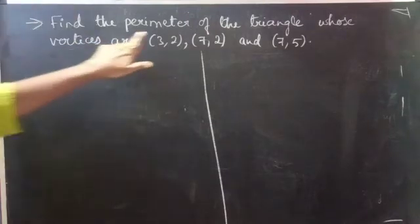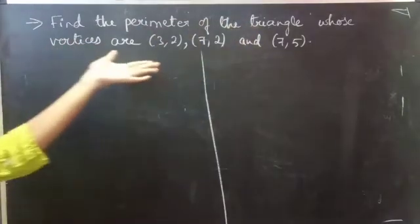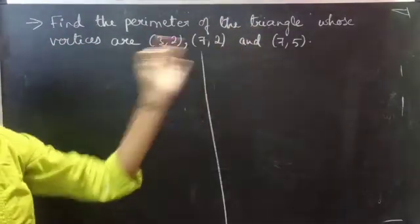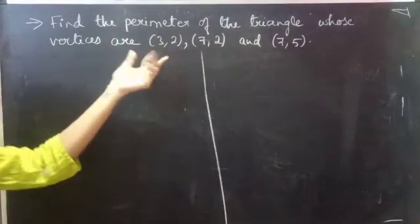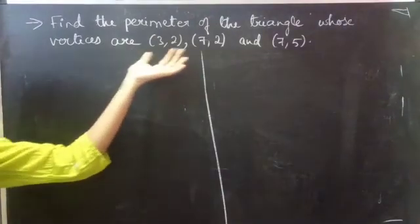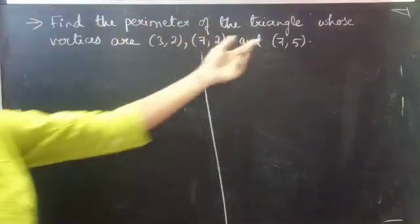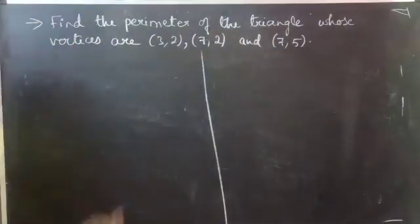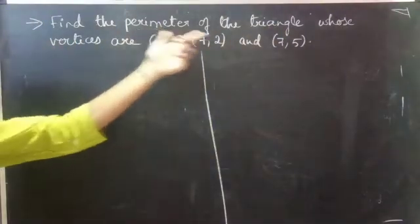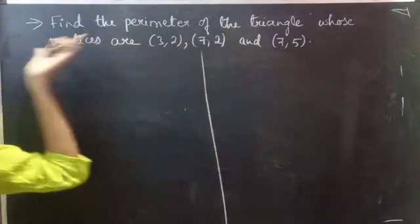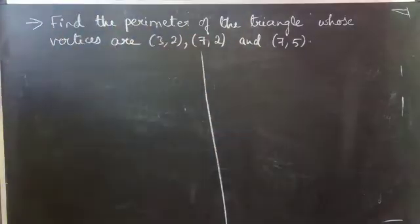Find the perimeter of the triangle whose vertices are given — so they give us three coordinates and state that these three coordinates are vertices of a triangle. We have to find the perimeter of that triangle.